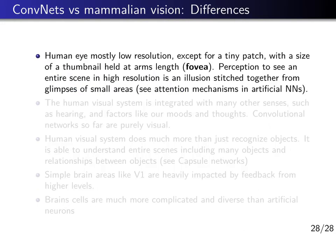There are some important differences between mammalian vision and the convolutional neural networks we use in computers. For example, the human eye is mostly low resolution except for a tiny patch around the so-called fovea, or yellow spot. The part of an image you actually see in high resolution is roughly the size of a thumbnail when your thumb is held at arm's length away from you.